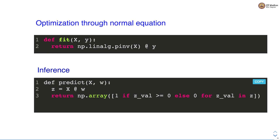For inference, we define a predict function that takes two arguments: the feature matrix and the weight vector. The feature matrix is of shape N cross M, where N is the number of examples and M is the number of features. We calculate an intermediate quantity Z by performing matrix multiplication between the feature matrix and the weight vector. If the value of Z is greater than or equal to 0 we assign class 1, otherwise we assign class 0. This is how we perform the inference task in least square classification.